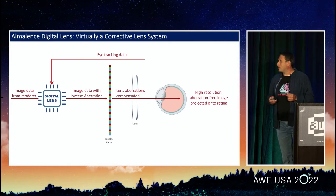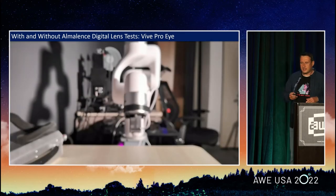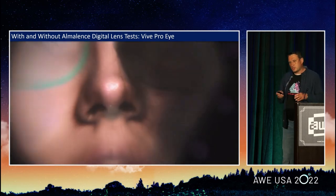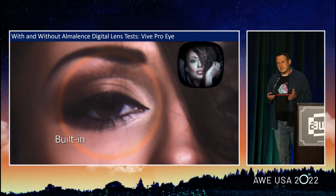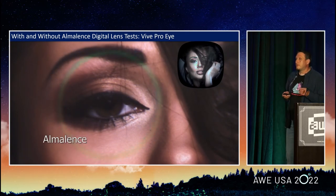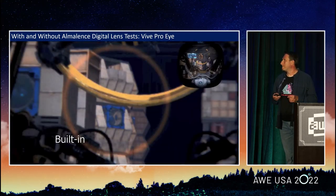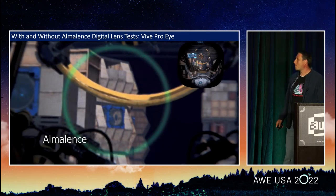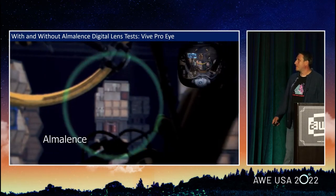Let's take a look at a few examples. The camera is now looking inside the Vive Pro Eye. The circle will show the gaze area — when it's red, it's the device as-is; when it's green, the digital lens is applied. Look at the texture, details, edges. A noticeable difference.